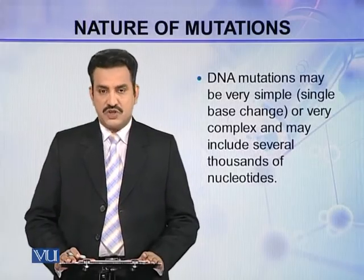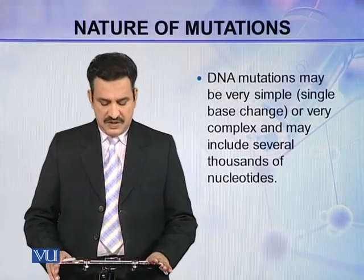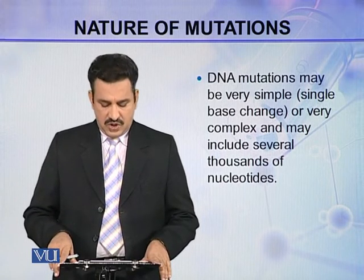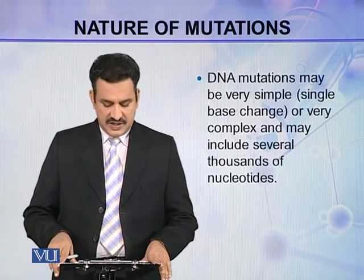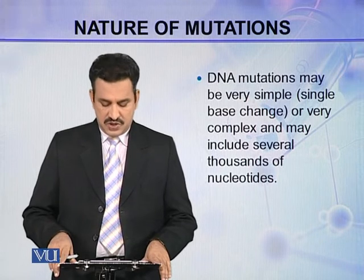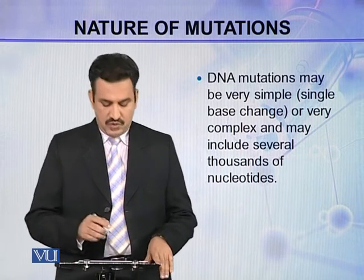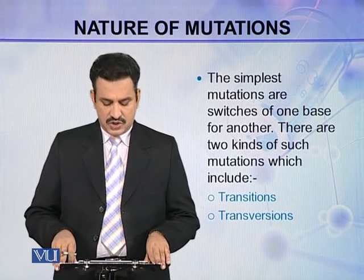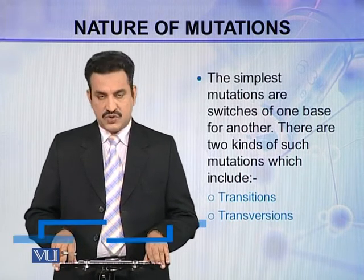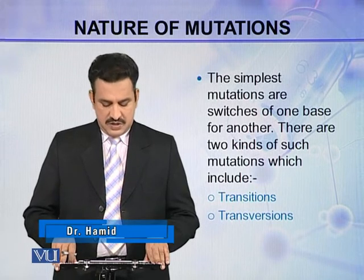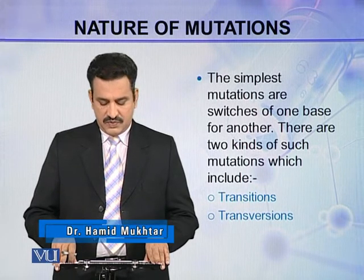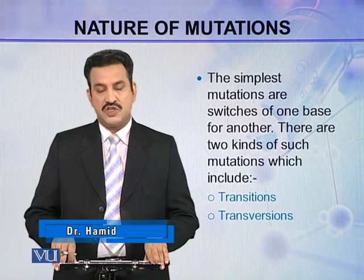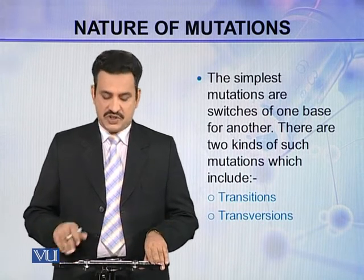DNA mutations may be very simple and may include a single base change, or they may be very complex and may include several thousands of nucleotides. The simplest mutations are switches of one base for another. There are two kinds of such mutations: transitions and transversions.